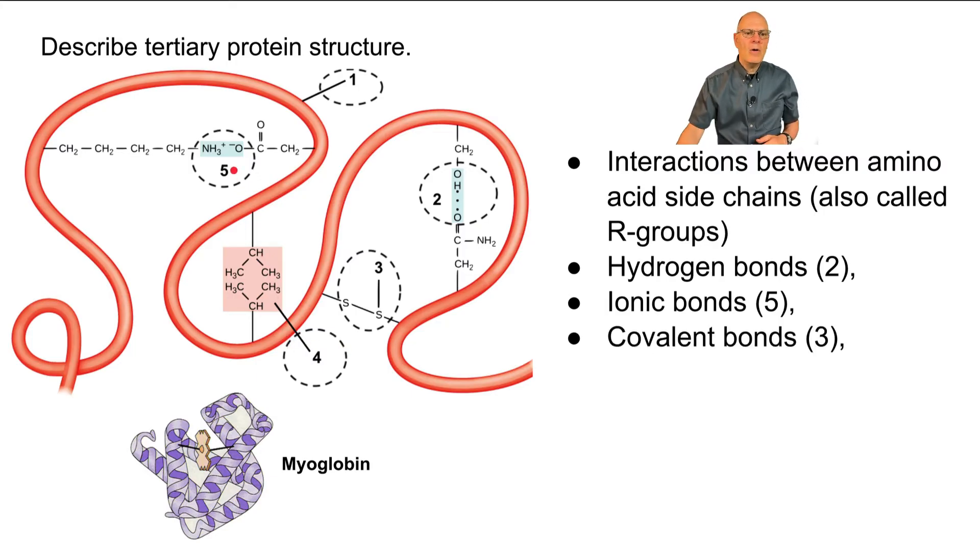There are covalent bonds, which are shown at number three. So that was between two sulfhydryl groups, another one of the functional groups. And this is a covalent bond that's very important in really tightly holding that protein into a specific shape.